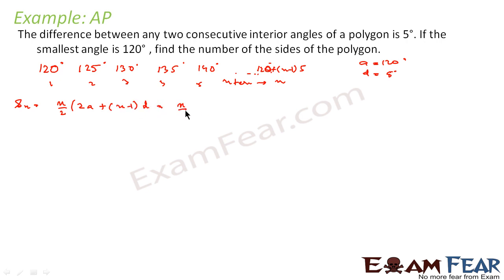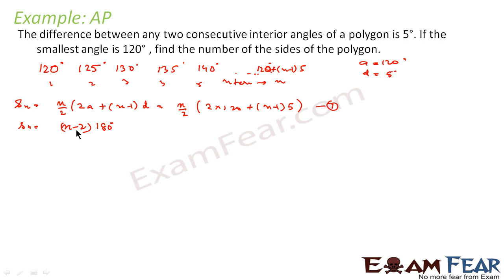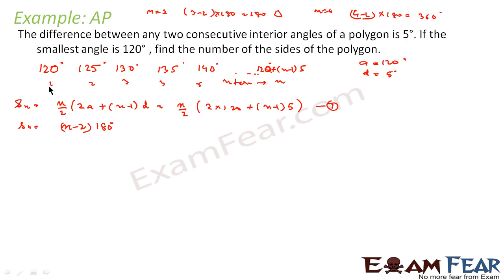We also know the formula for the sum of interior angles of a polygon with n sides: it equals (n minus 2) times 180. We can verify: for n equals 3 (triangle), we get 180 degrees, and for n equals 4 (square), we get 360 degrees — both correct. So we equate the two expressions for the sum of angles.